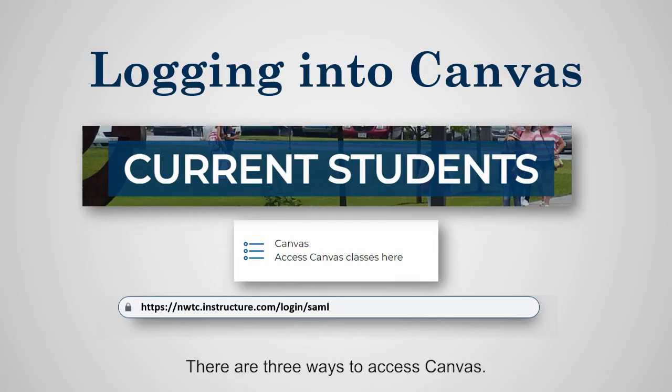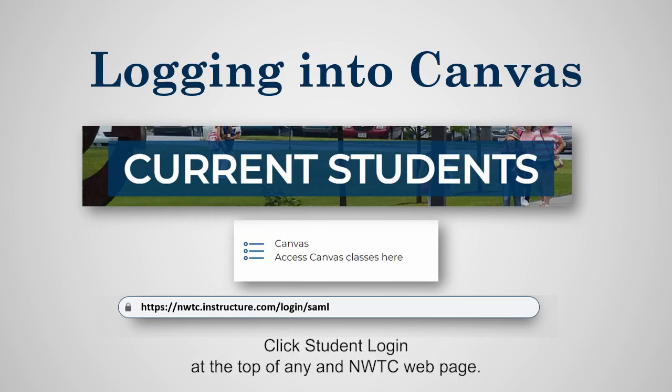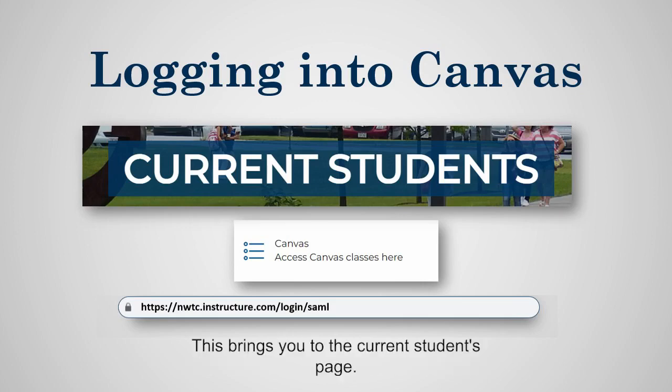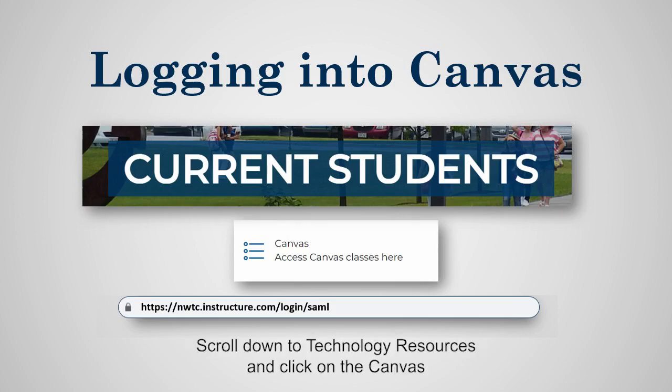There are three ways to access Canvas. Click Student Login at the top of any NWTC webpage. This brings you to the Current Students page. Scroll down to Technology Resources and click on the Canvas link. Or log in to the Student Portal and click on the Canvas link.